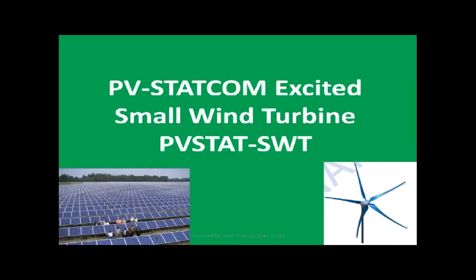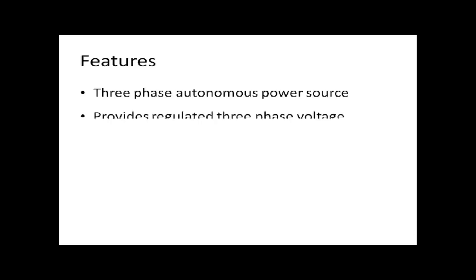Welcome to the product presentation on PVSTATCOM Excited Small Wind Turbine. The name of our product is PVSTAT SWT. It uses a PV array and a wind turbine to provide a three-phase autonomous power source to cater the needs of remote rural application where grid is not available.